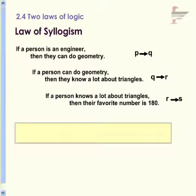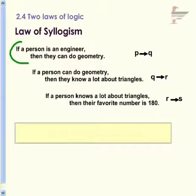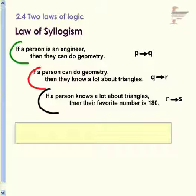I have: if a person is an engineer, then they can do geometry. That is my first set of if P, then Q. If a person can do geometry, then they know a lot about triangles. If a person knows a lot about triangles, then their favorite number is obviously 180.